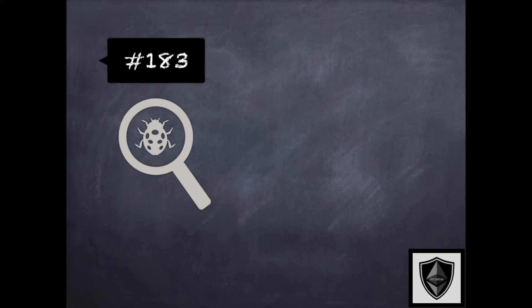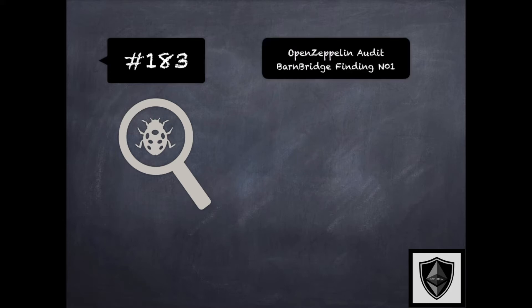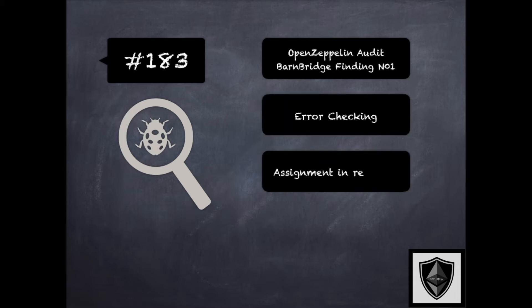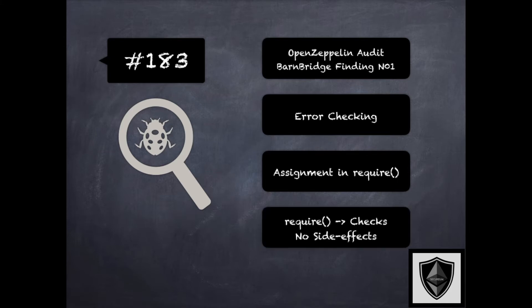Finding 183 is a finding from OpenZeppelin's audit of Barnbridge, where the concern was about a require statement that made an assignment, which deviates from standard usage and intention of require statements and could lead to confusion. The recommendation was to consider moving the assignment to its own line before the require statement and then using the require statement only for condition checking.